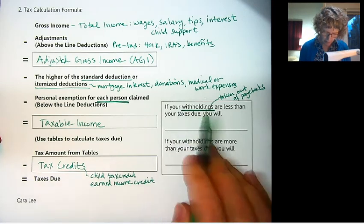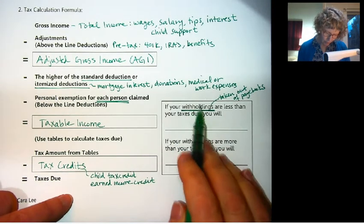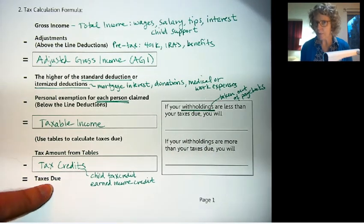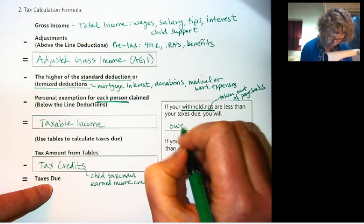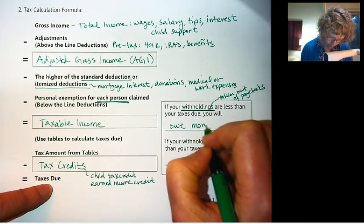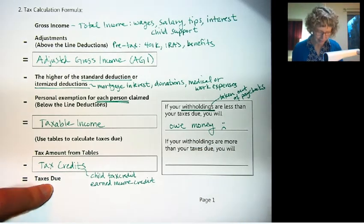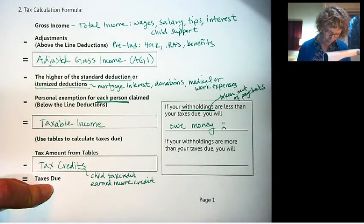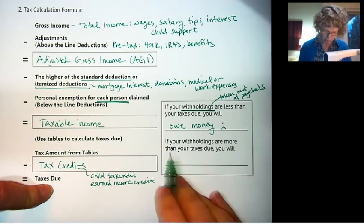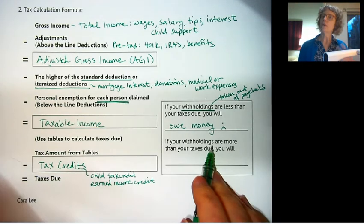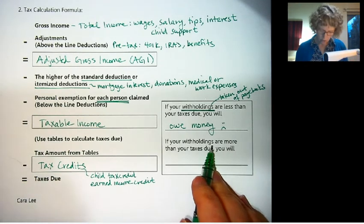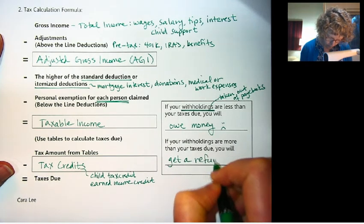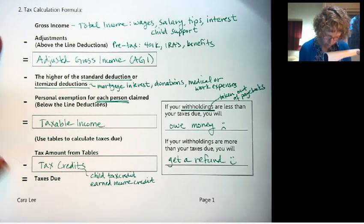So if your withholdings are less than the taxes due, so they didn't withhold enough, if they didn't withhold as much as you owe, then you're going to owe money. You have to pay the difference. Nobody really wants to pay taxes, even though they go for very important benefits. If your withholdings are more than your taxes due, that means more was taken out than you actually owe. So that's when you get a refund.